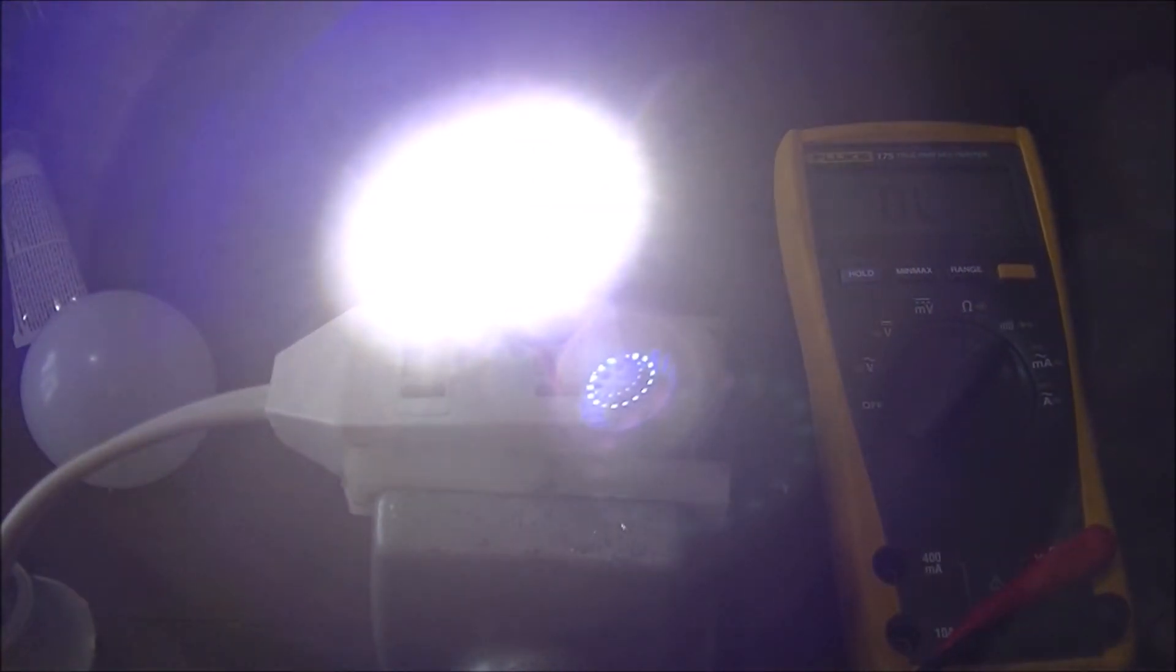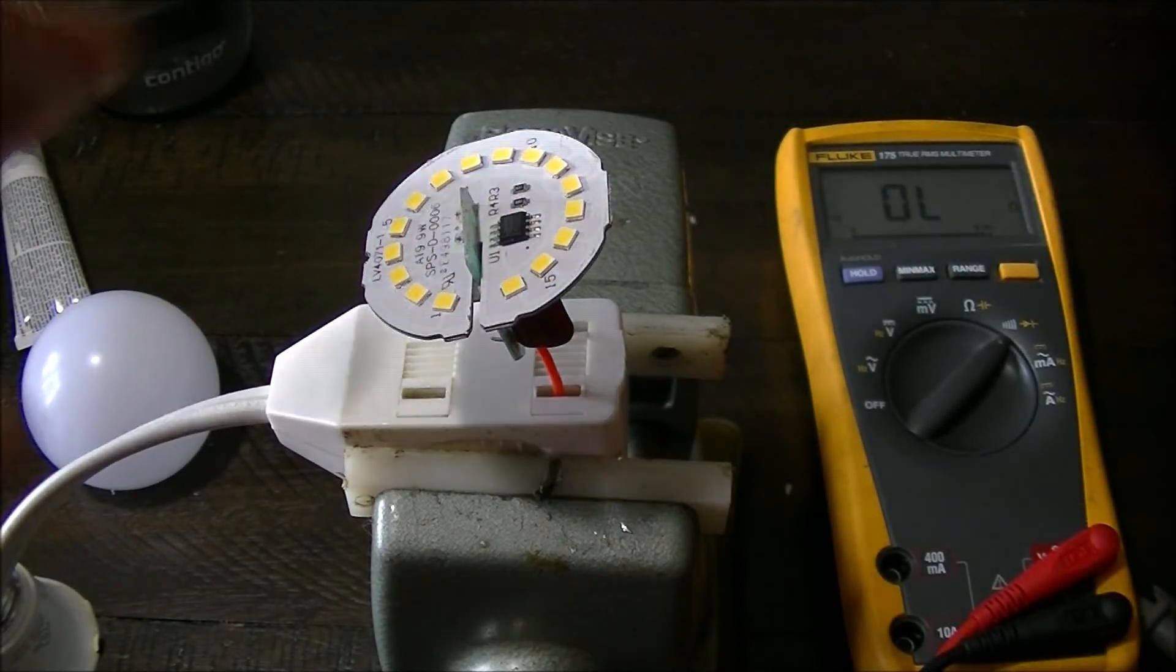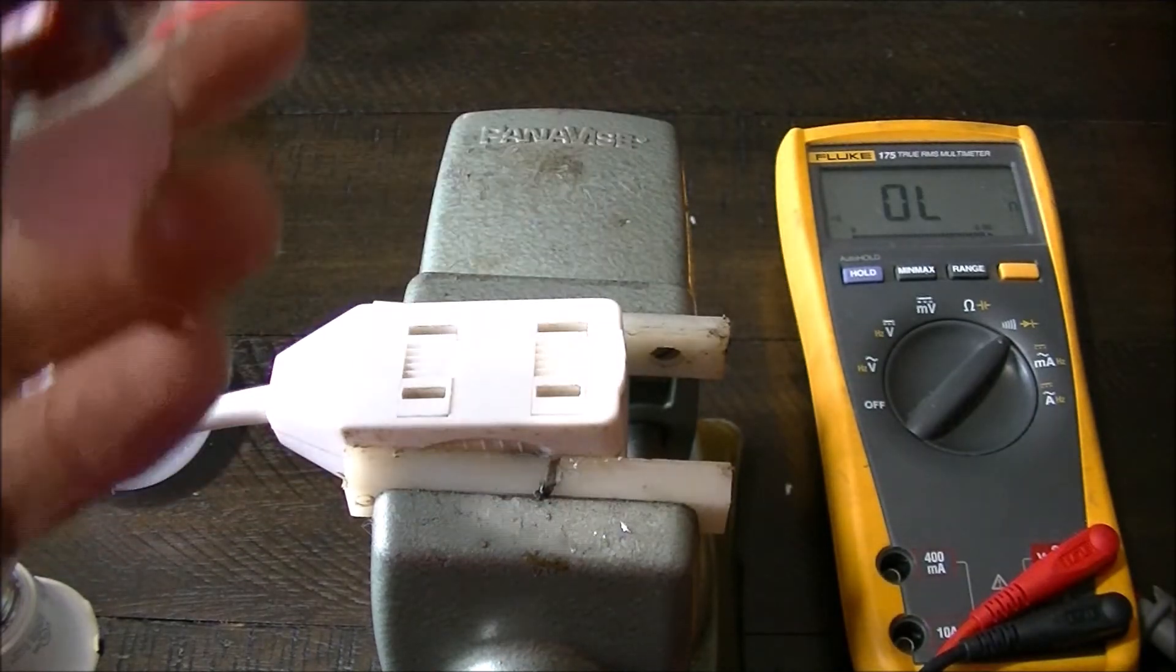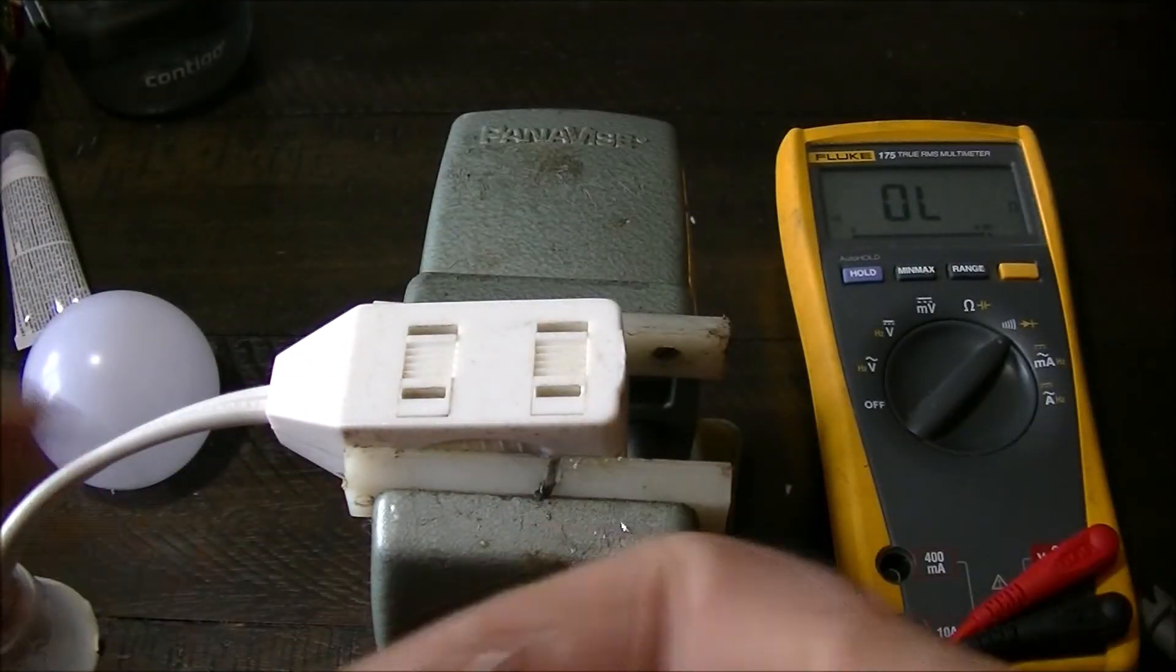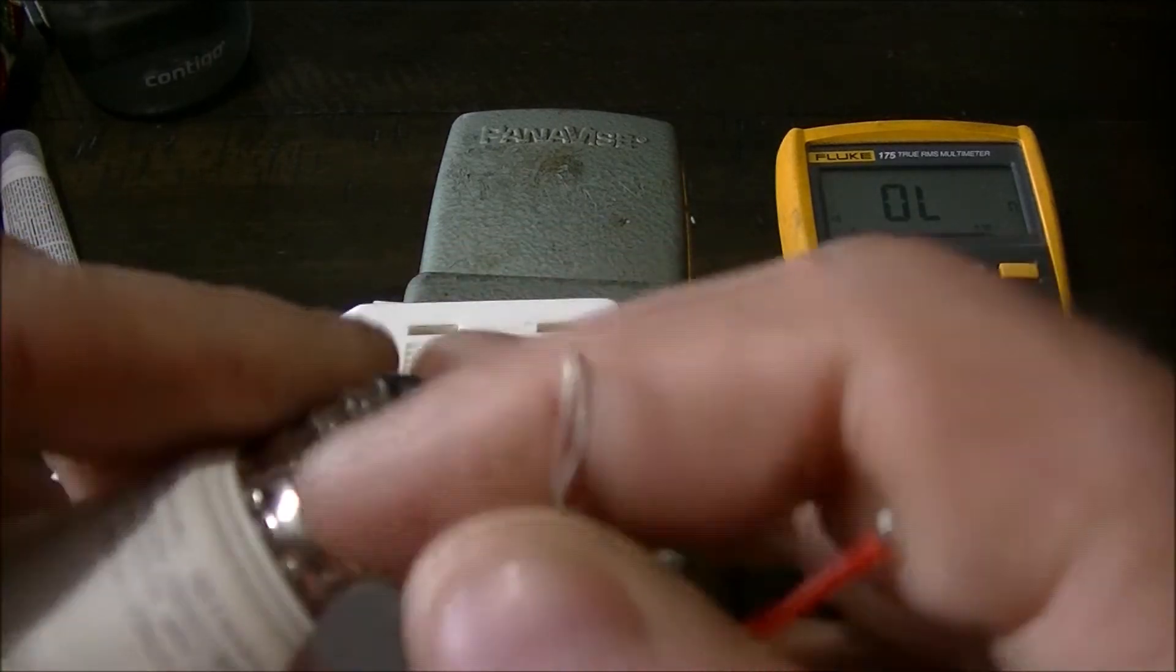So the solder point failed on this bulb, and I think it's the resistor. Unplugged again. Yeah, I'm thinking this resistor wire let go and I'm thinking it was probably on the ground.